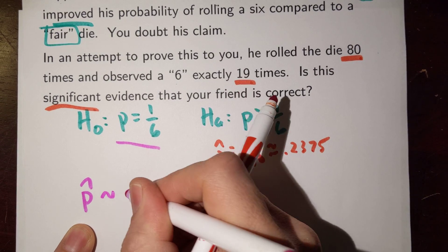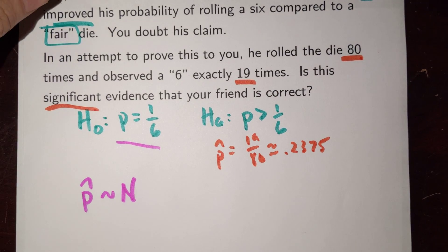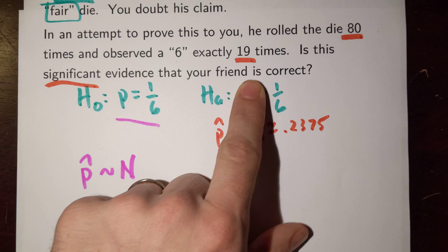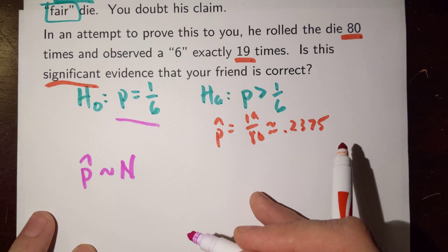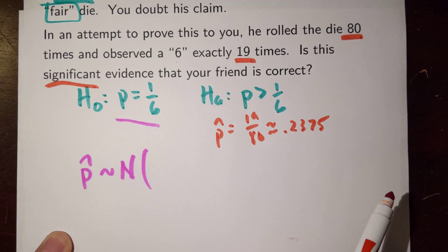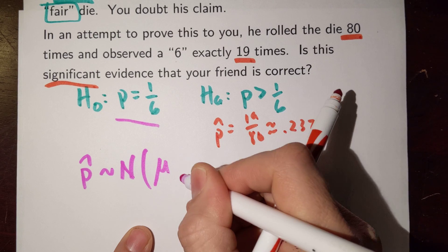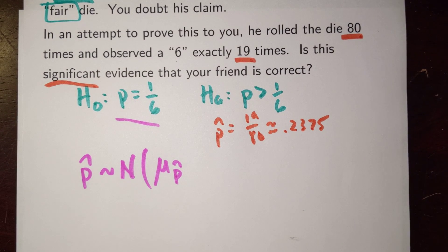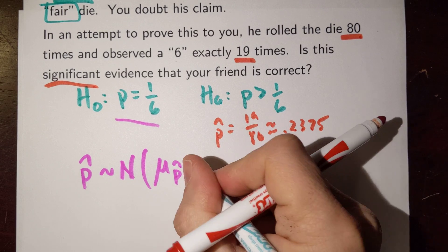Well, we know that the sampling distribution of p-hat should be approximately normal so long as the large counts condition is satisfied. And we can check, but that's the case here. We'll definitely have at least 10 expected successes and 10 expected failures. Then we know that the mean of this sampling distribution should be equal to whatever the parameter is in our population, in this case 1/6.